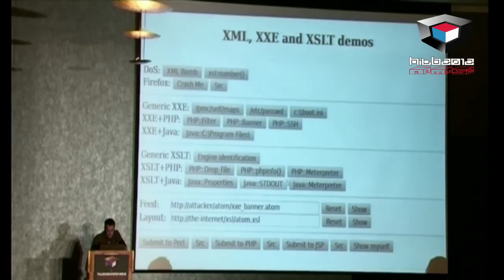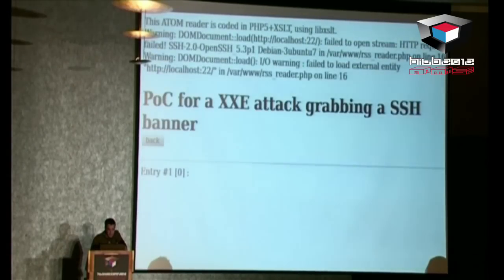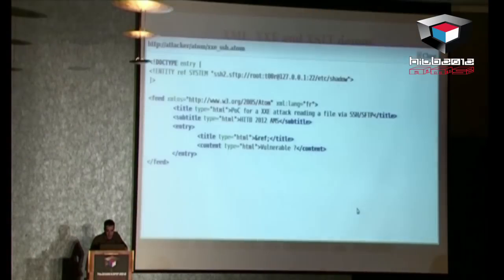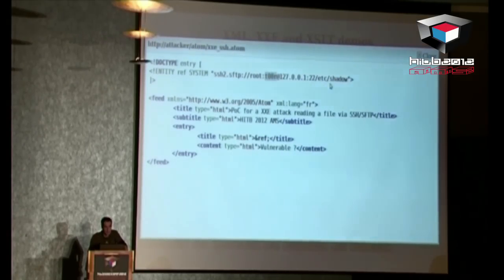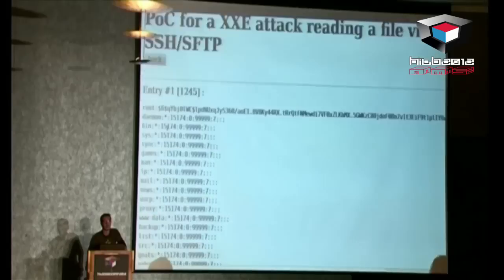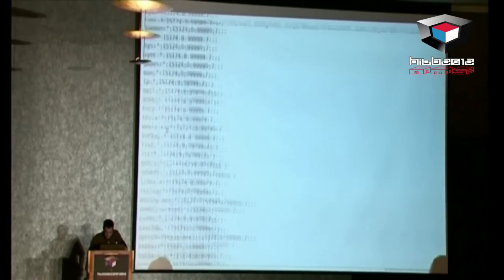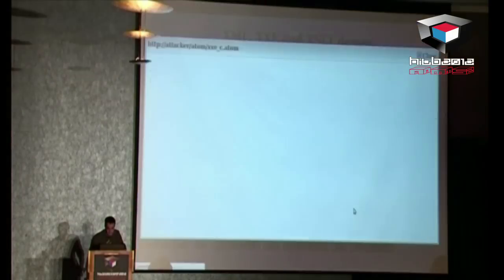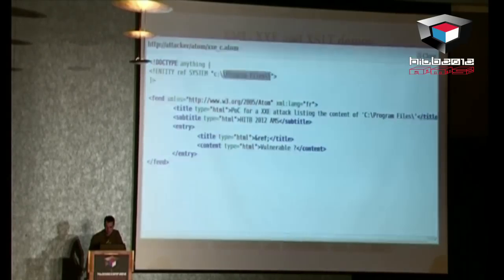Now we will connect to the SSH port on the local machine and get everything we need — I'm using Ubuntu. The local root account has a weak password, and I will try to read the /etc/shadow file. It takes a little longer because we need an additional SSH connection. And here is my root password — you can take pictures. And just to show directory listing under Java, I will request the Program Files folder under Windows.